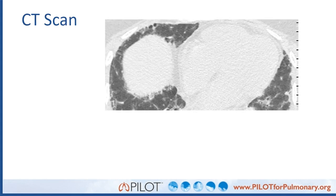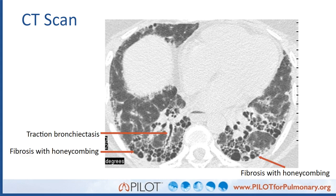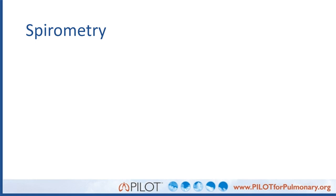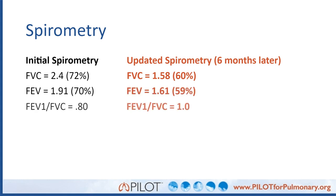Unfortunately, his CT scan shows a lot of concerning features. What we saw before was primarily mosaicism and ground glass opacities. The ground glass has improved — we've effectively treated what appeared to be active inflammation — but in the interim, he's developed signs of pulmonary fibrosis: traction bronchiectasis and coarse honeycombing that have developed over just six months, despite treatment with mycophenolate. On repeat spirometry, his FVC has declined from 2.4 L (72% predicted) to 1.58 L (60% predicted), with a preserved ratio demonstrating a continued and worsening restrictive deficit.